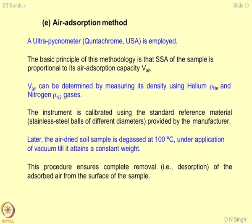The air adsorption method uses an ultra-pycnometer manufactured by Quantachrome. The basic principle is that the specific surface area of the sample is proportional to its air adsorption capacity — the volume of air adsorbed onto the surface. Surface area can be determined by measuring the density using helium gas and nitrogen gas. The contrast between the two densities, multiplied by another parameter, gives you the surface area.